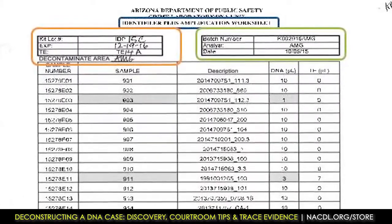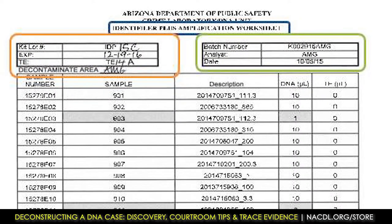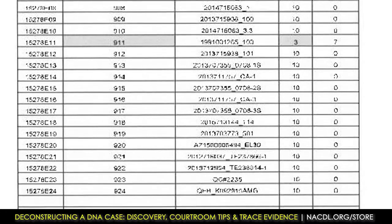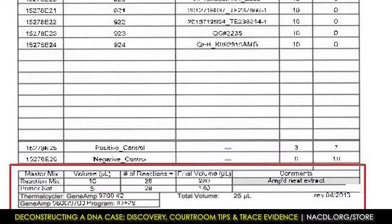These are all sheets that you're going to get and should get in a proper DNA discovery packet. This is the amplification worksheet. This worksheet is done when you're ready to amplify. On this worksheet, we look at the analyst, the dates, and then—if you want to start sticking sharp objects in your eyes because this gets very redundant—analyst, dates, buffers, expiration, your sample, volumes. Then you start seeing a comment section after the amplification. These comment sections can generate some very, very good information.